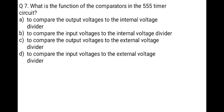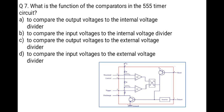The next question: what is the function of the comparators in the IC 555 timer circuit? Options: to compare the output voltage to the internal voltage divider; to compare the input voltage to the internal voltage divider; to compare the output voltage to the external voltage divider; or to compare the input voltage to the external voltage divider. From the internal block diagram of IC 555, the comparators compare the input voltage to the internal voltage divider. Correct option is B.